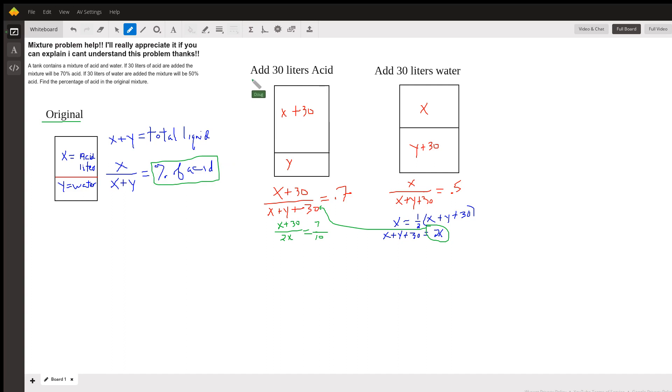Now, if we add 30 liters of acid, this will be the situation, and if we want to calculate the percentage of acid in this situation, x plus 30 would be the amount of acid in the tank at that time, and the total amount of liquid in the tank would be, add all this together, x plus y plus 30, and we know that that gives us 70% or 7 tenths as a decimal.